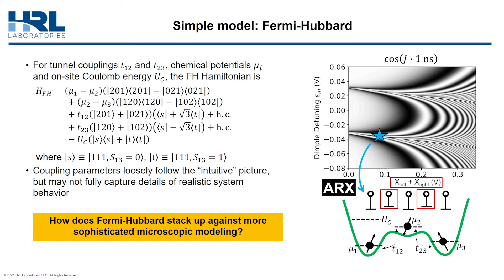We refer to such a plot as a fingerprint plot — it's basically a plot of the cosine of J times T for some fixed time T, in this case one nanosecond. Each bright fringe is an integer multiple of one gigahertz exchange. We find by inspecting this plot that Fermi-Hubbard predicts the existence of an asymmetric resonant exchange, or ARX regime, at relatively low dimple detuning, which persists to multi-gigahertz J as we forward bias our X gates.